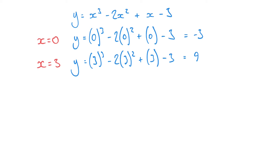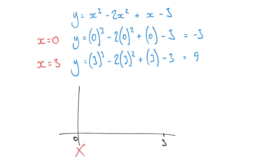So what we see is: if I draw a quick sketch, when x was 0, y is a negative number — minus 3, somewhere down here. And when x equals 3, y is a positive number — 9, somewhere up there. Given these two points, we know that whatever shape our function is, it must cross the x-axis between these two points.